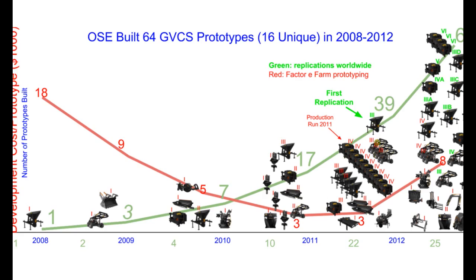The first replication actually happened in 2012. In 2013, all the ones in red are what we built at Factor Farm. The green ones are machines built in other countries. In 2012 and 2013 there were about 13 machines built not by us, but by replicators. Still, we're not scaling in any way virally — it's good, but nowhere near viral adoption.